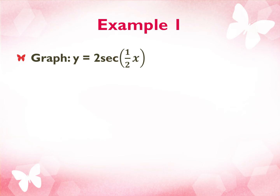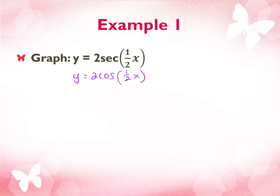y equals 2 secant ½x. What are we going to graph first? If it's secant, we first graph cosine — we're going to pretend this is actually cosine. Then everywhere there's an x-intercept, we draw an asymptote, and everywhere there's a max, we bounce the U-shapes off of it.